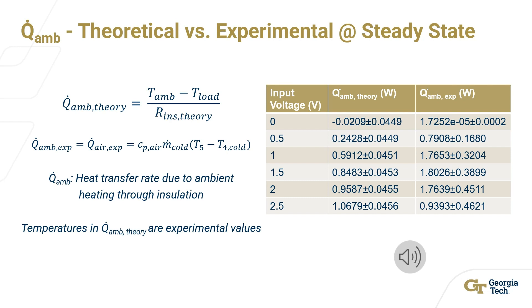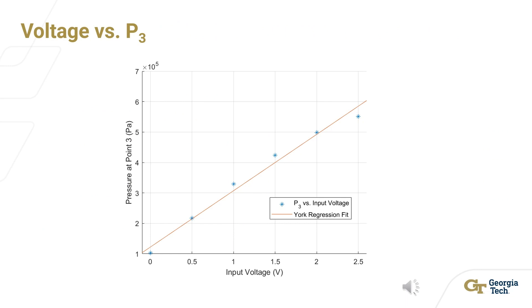This is likely due to heat loss to the surrounding environment due to the imperfect insulation. From the voltage versus pressure graph, we can see that voltage is a means of controlling pressure. Increasing the voltage increases the pressure. The relationship between voltage and pressure is nonlinear concave down, where the pressure shows signs of leveling off as voltage increases.